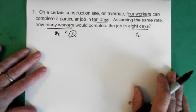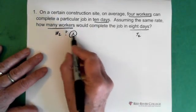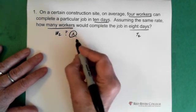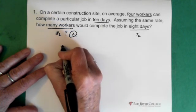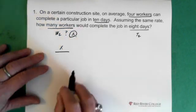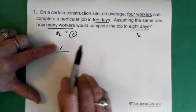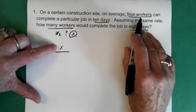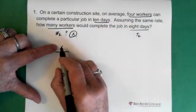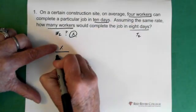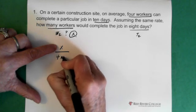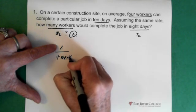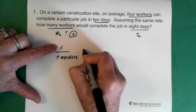Alright, so we want our x, how many workers here. And that's the x of the second piece, right? And we put it over the 4 workers, because this is our workers section. So put it over the 4 workers, because that's what we're trying to solve for is the workers.